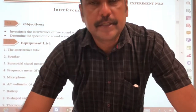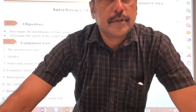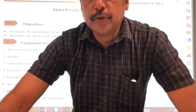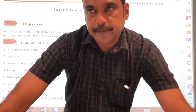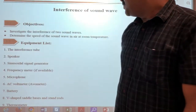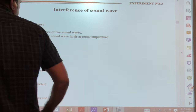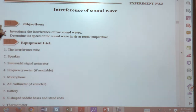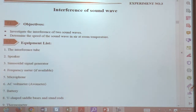In today's experiment we are going to do interference of sound waves. The objectives of our experiment are to investigate the interference of two sound waves, and to determine the speed of the sound wave in air at room temperature.